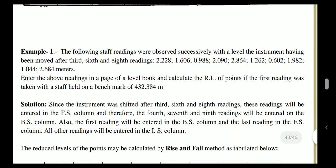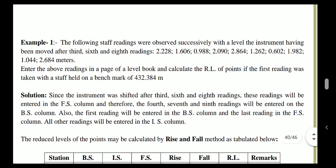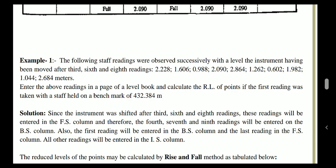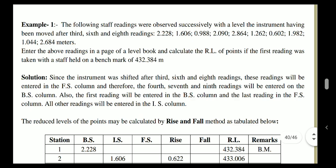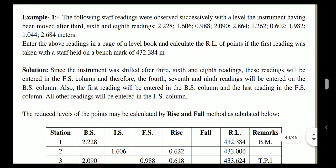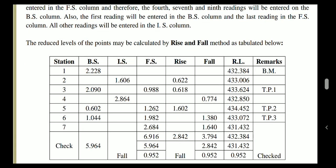When levelling begins after placing the instrument, the very first reading taken is always a back sight. So 2.228 is noted in the back sight column. After shifting the instrument, you re-observe the same staff position where fore sight was taken — making that reading a back sight. This means the 4th, 7th, and 9th readings — 2.090, and 1.044 — are back sight readings. All remaining readings go into the intermediate sight column. We have a total of 7 stations.